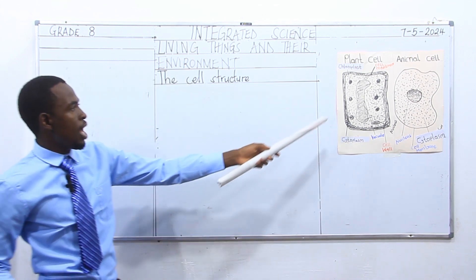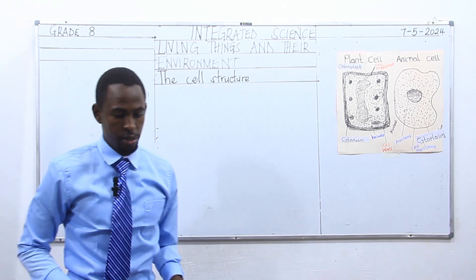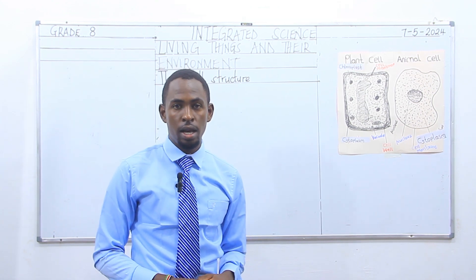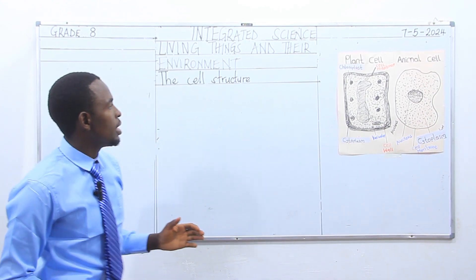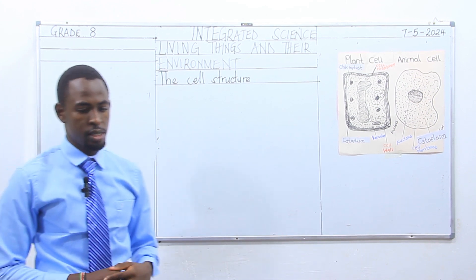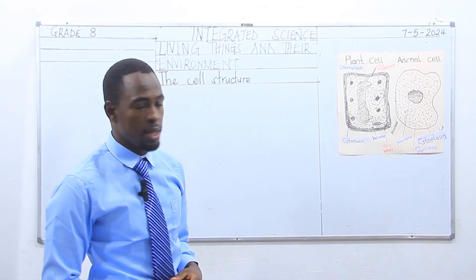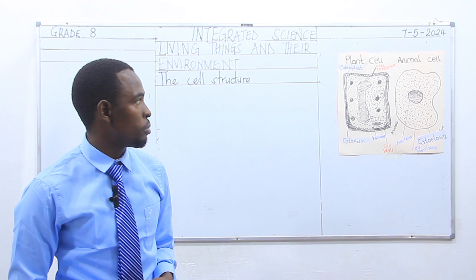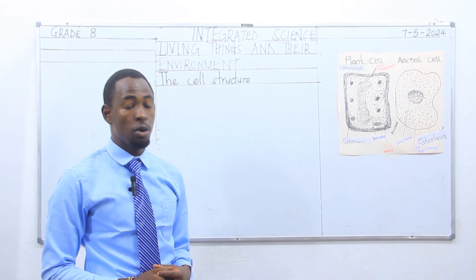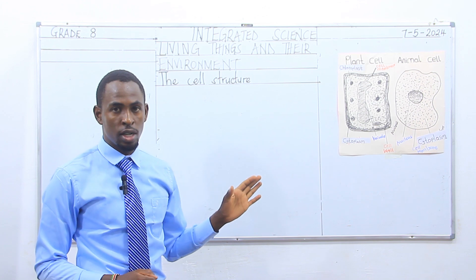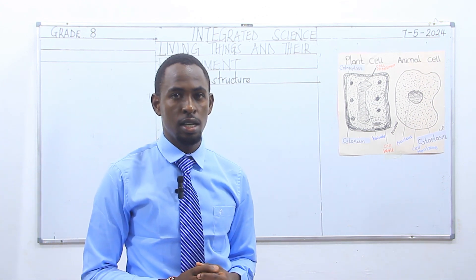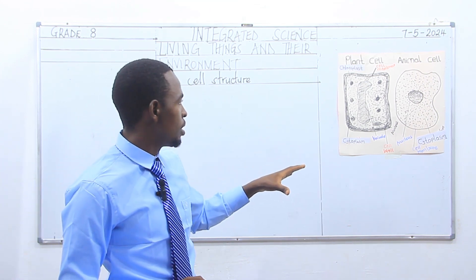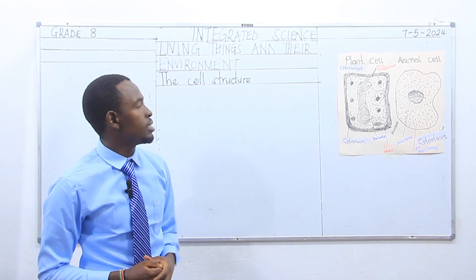So let us recap what we have learned. We learned about the cell and its meaning. We have also seen that the cell is found in plants and in animals, and that the cell is responsible for carrying out biological processes in living organisms. We also noted that cells are very small structures we cannot observe with our eyes, so we use a microscope to magnify them. We identified the structures and parts of cells in plants and in animals.